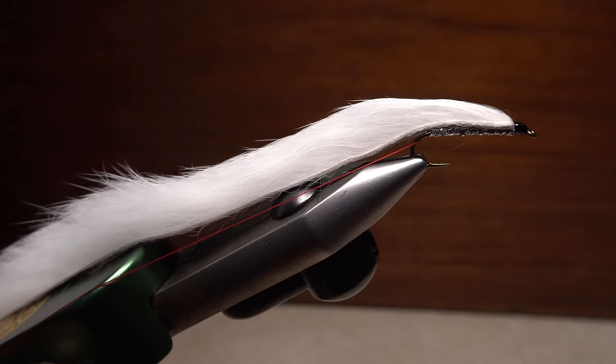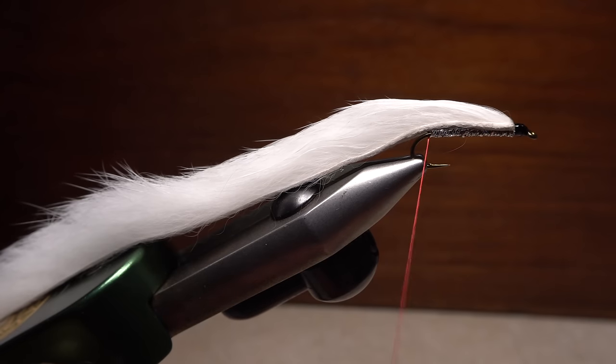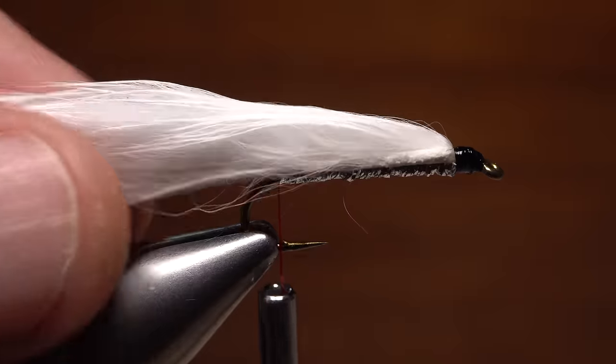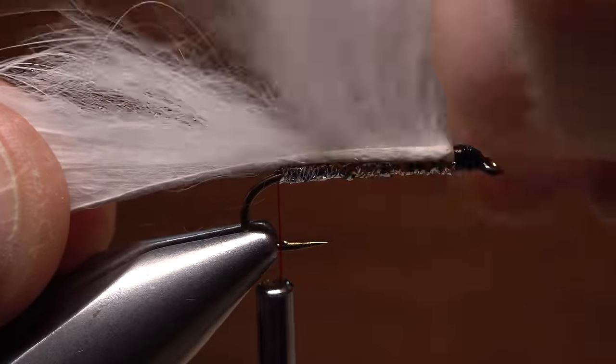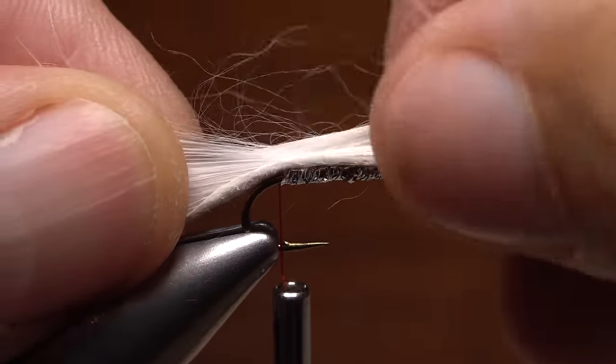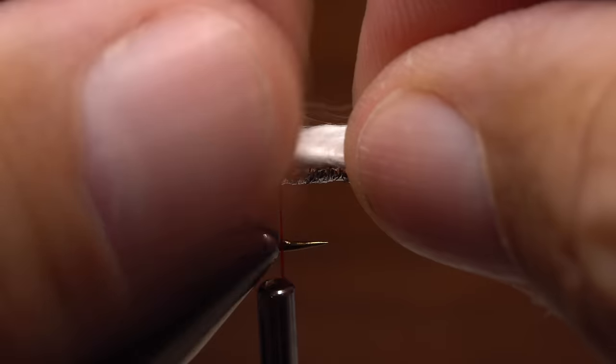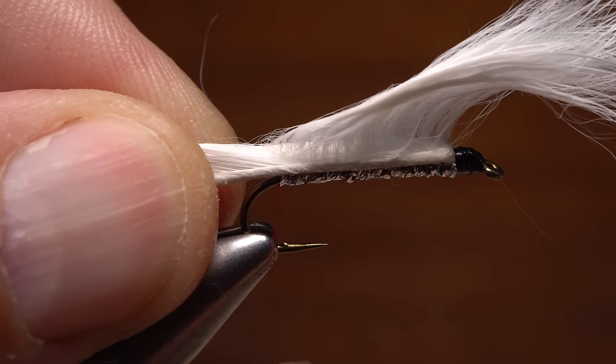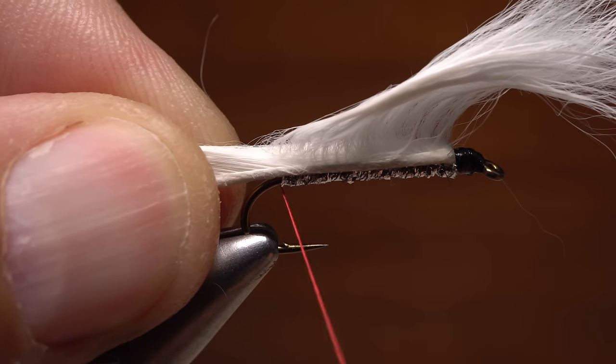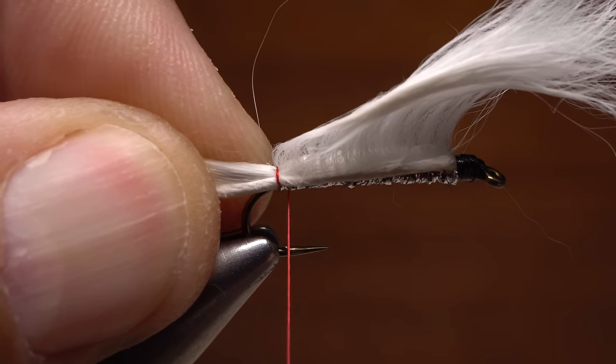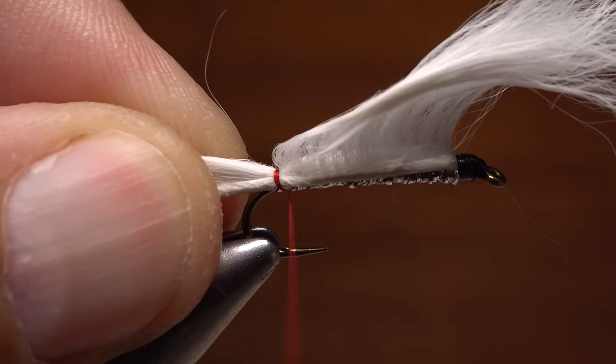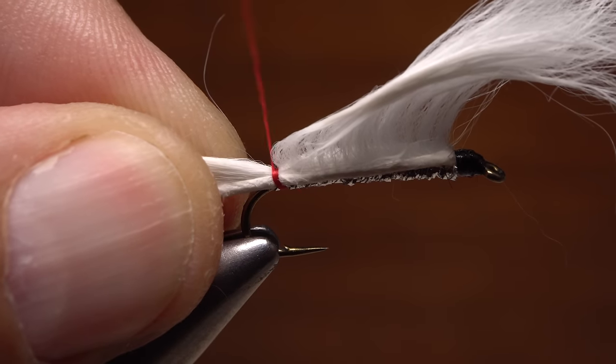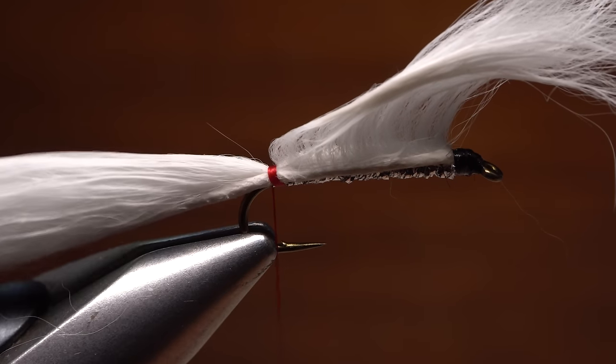Retrieve your red thread from its stored location and bring your bobbin up to a good working length. Wet your fingers and use them to separate the rabbit fur above the location of your tying thread at the back edge of the silver braid. Once again, give your bobbin a good clockwise spin to cord up and strengthen the thread. Start taking wraps to firmly bind the zonker strip to the top of the hook shank and to establish where the body ends and the tail begins.